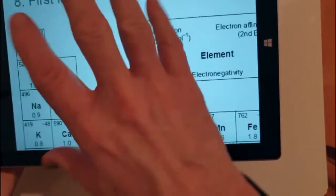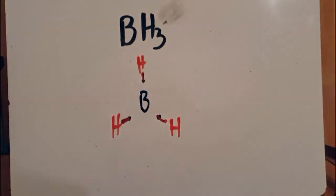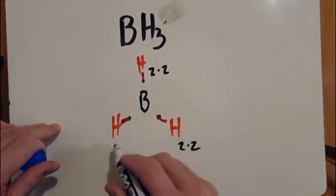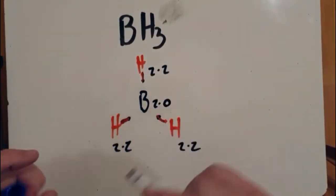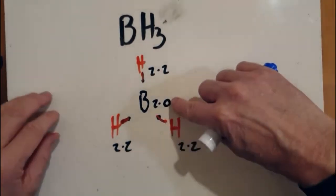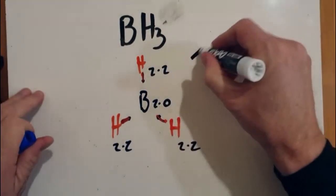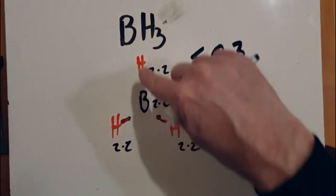So boron has an electronegativity of 2 and hydrogen is 2.2. So hydrogen slightly pulls the electrons towards itself. So 2.2 for the hydrogens and 2.0. So the bonds, well, you could argue the bonds are nonpolar. The difference between these two electronegativity values, if that difference is less than 0.3, you're okay to say it's a nonpolar bond.